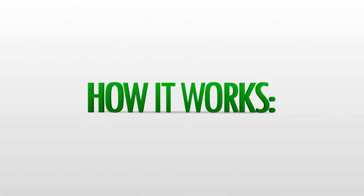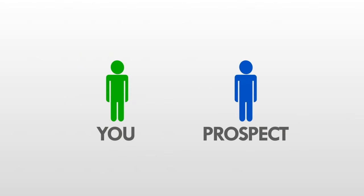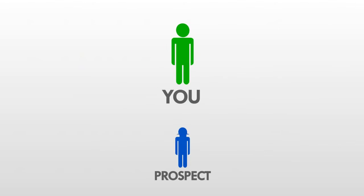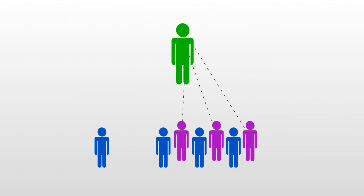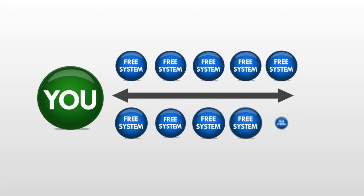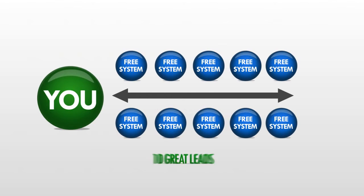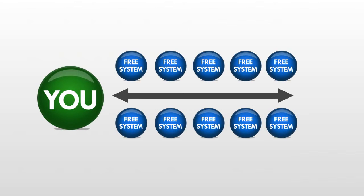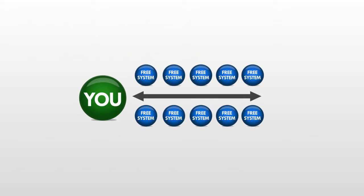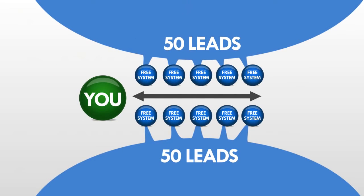Here's how it works. When anyone that you give the free system to starts generating leads, every other lead is going to roll up to you. For example, suppose you give away 10 free systems — you're going to have 10 great leads. You would now be receiving every other lead that these 10 people ever generate. When these 10 people generate 10 leads each, that's 100 leads.